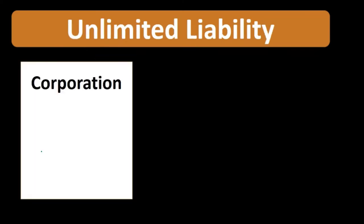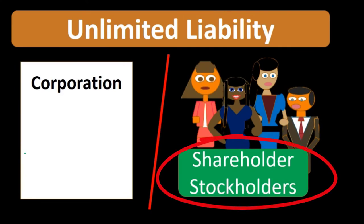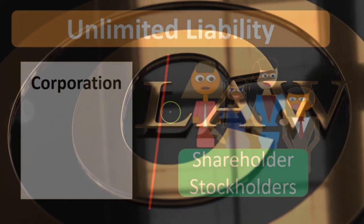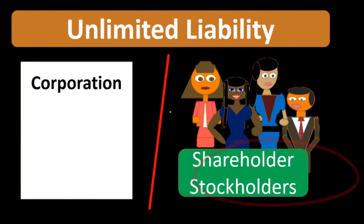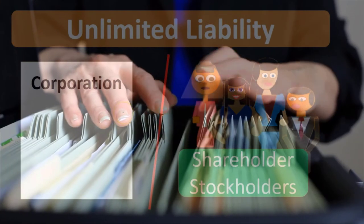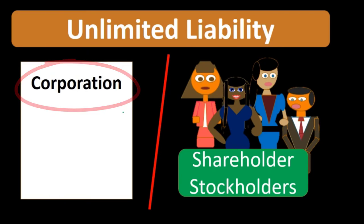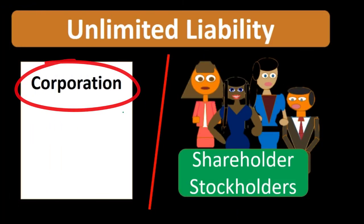Comparing this to a corporation: a corporation is a separate legal entity from its owners — in this case, the shareholders. One of the main reasons for forming a corporation is that it provides greater liability protection for shareholders. From an accounting standpoint, we keep the books separate in either case, but the corporation is actually a separate legal entity with separate ownership of the corporation's resources.